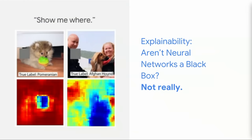Another thing we've been working on beyond improving the models is actually trying to have the networks explain how they're making a prediction. Taking a play out of the playbook from the consumer world, we started using a technique called 'show me where.' Using an image, we generate a heat map of where the relevant pixels are for a particular prediction. Here you can see a picture of a Pomeranian — the heat map shows something in the face that makes it look Pomeranian-y. And here there's an Afghan hound with the network highlighting the Afghan hound.